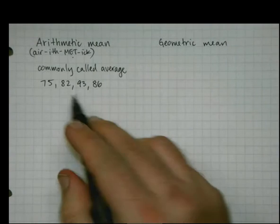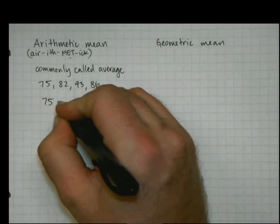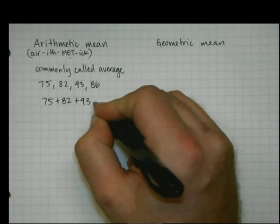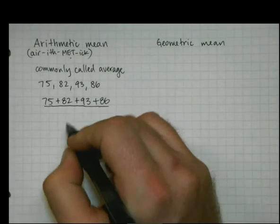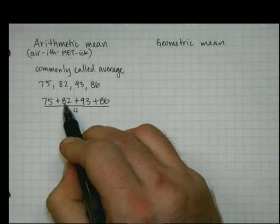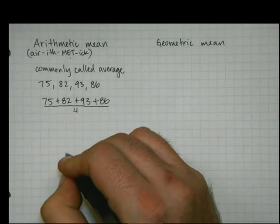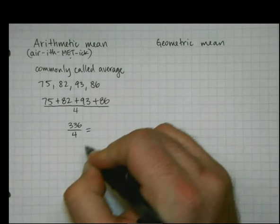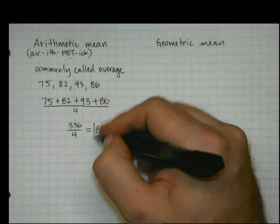And if I wanted to find the arithmetic mean of these, I would add them up. 75 plus 82 plus 93 plus 86. And then I would divide by the number that there are, in this case four of them. Remember my motto, don't be a hero, use a calculator. They add up to 336. 336 divided by 4 is 84. So it's really easy to figure out, and it's the one you guys are used to.